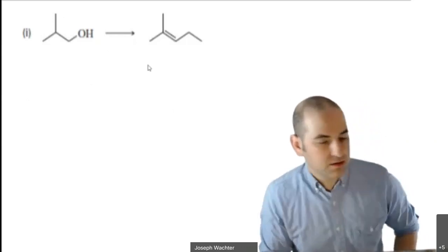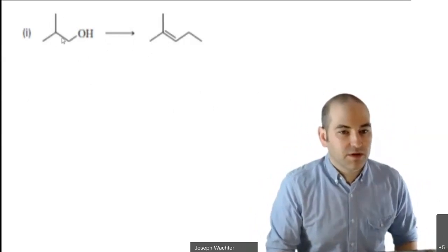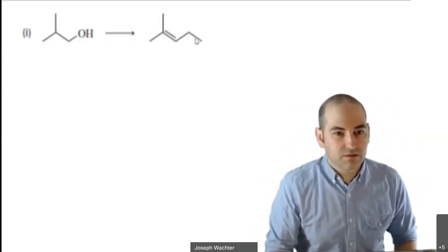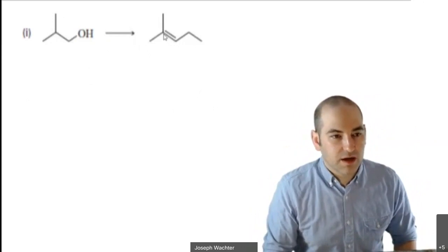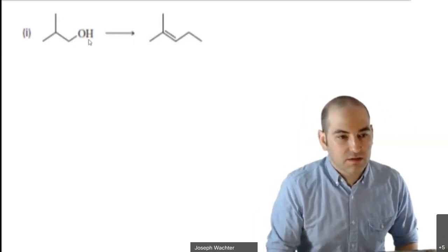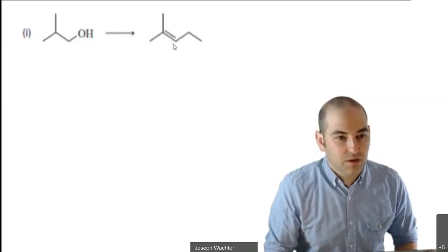So synthesis transformation here. We're going to be looking at going from this alcohol to this alkene-type product. The other thing that's tricky is that we have to add some carbons. In this structure, we have four carbons. This one has six. So that means we need to add two carbons to this, plus also end up with an alkene here.